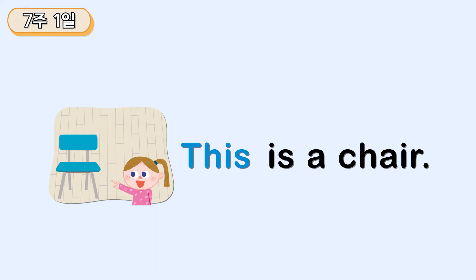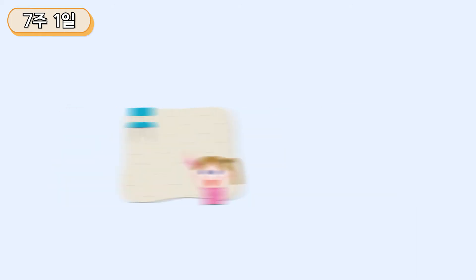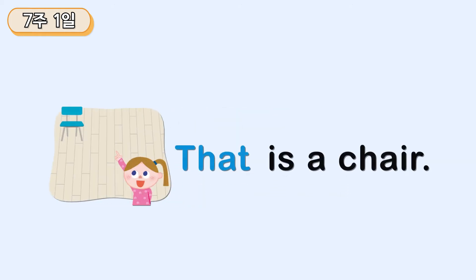This is a chair. 이것은 의자야. That is a chair. 저것은 의자야.